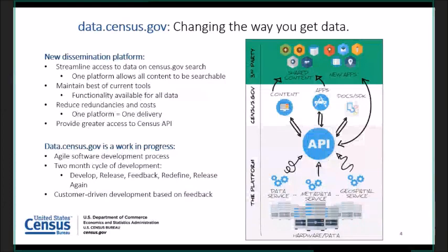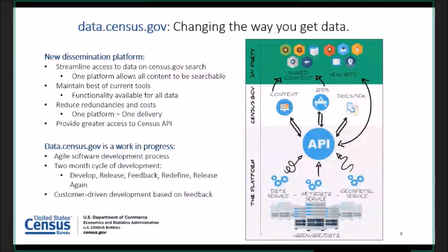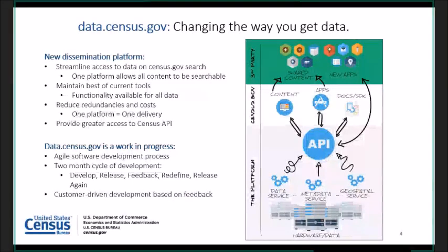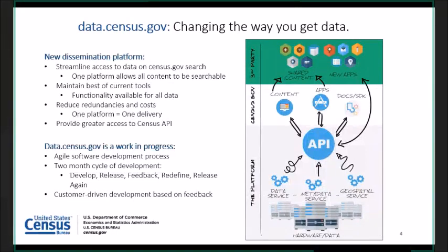With data.census.gov we are able to control the development in-house and align it with the needs of our users. We use a two-month development cycle where we continuously take feedback, improve the site, and push updates live every two months. The API — application programming interface — is at the heart of everything we do. In order for you to get data on data.census.gov, it has to be loaded into our public API, which gives us the flexibility to display information not just in table format but in different views and merged data sets in a single view.